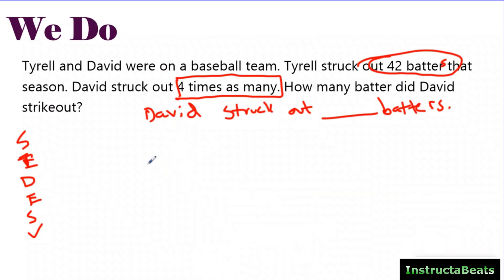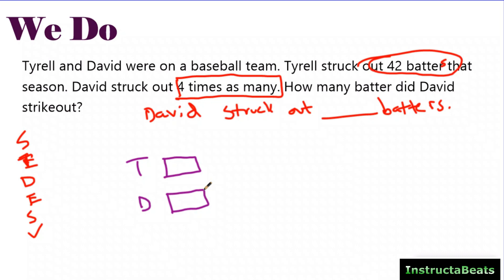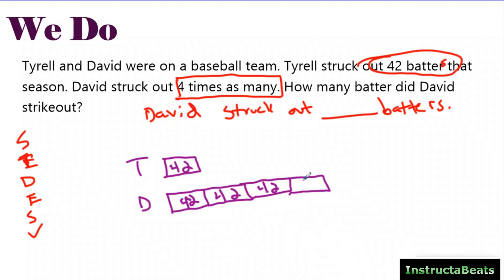I know I'm comparing Tyrell and David, so I'm going to give them each an equal group — notice I started at the same place. David struck out four times as many, so David has four groups next to him, as equal as possible. Tyrell's tape diagram is 42. David's is 42 in each group. I put my question mark on David's full bar, which connects to the part-whole model: 42 plus 42 plus 42 plus 42. Multiply any way you want — the answer is 168.